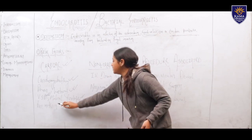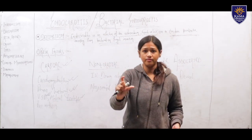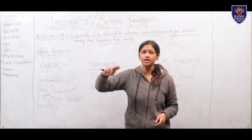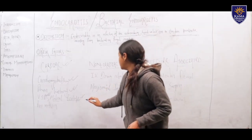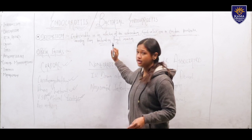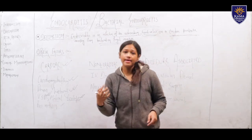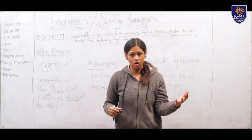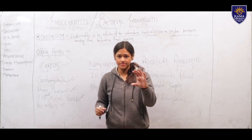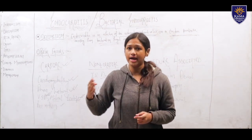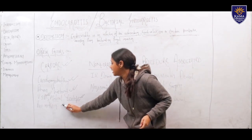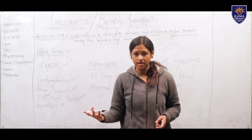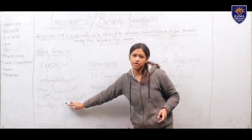Then mitral prolapse — a prolapsing of the mitral valve, which is situated on the left side of the heart between the atrium and ventricle — is also a cause of endocarditis. And then pacemakers: sometimes the heart's pumping is not occurring normally, so a pacemaker is placed inside the heart to maintain the rhythm. Sometimes due to malpractice or some reason, this can also lead to endocarditis.